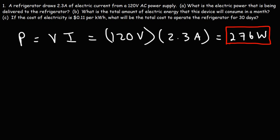Now let's move on to part B: what is the total amount of electric energy that this device will consume in a month? To calculate electric energy we need to multiply power and time. I'm going to do this by means of a conversion process. The electric power is 276 watts.